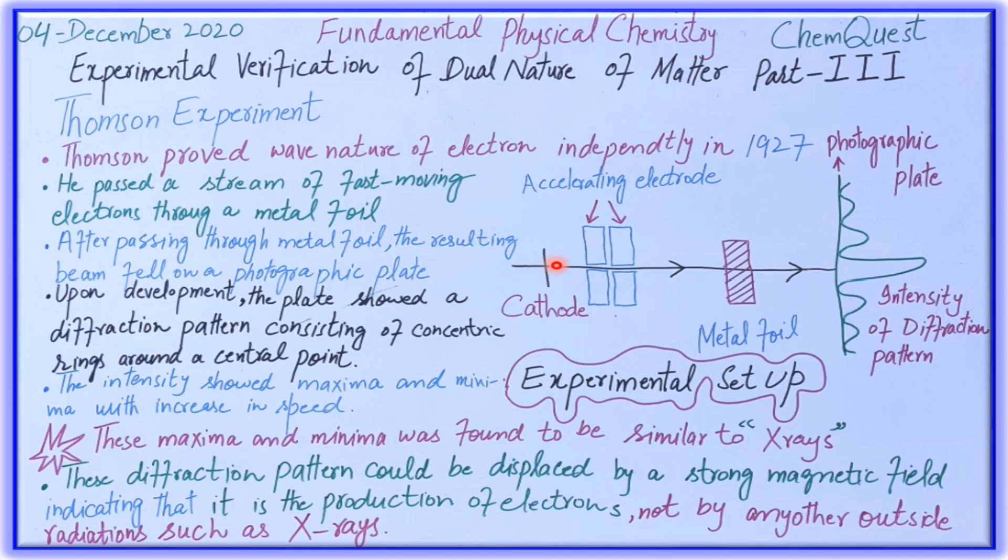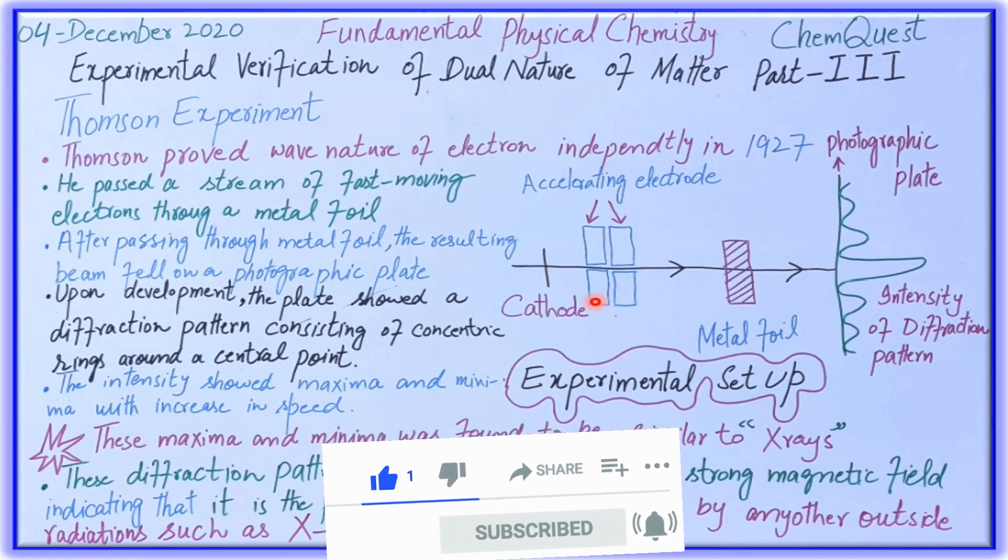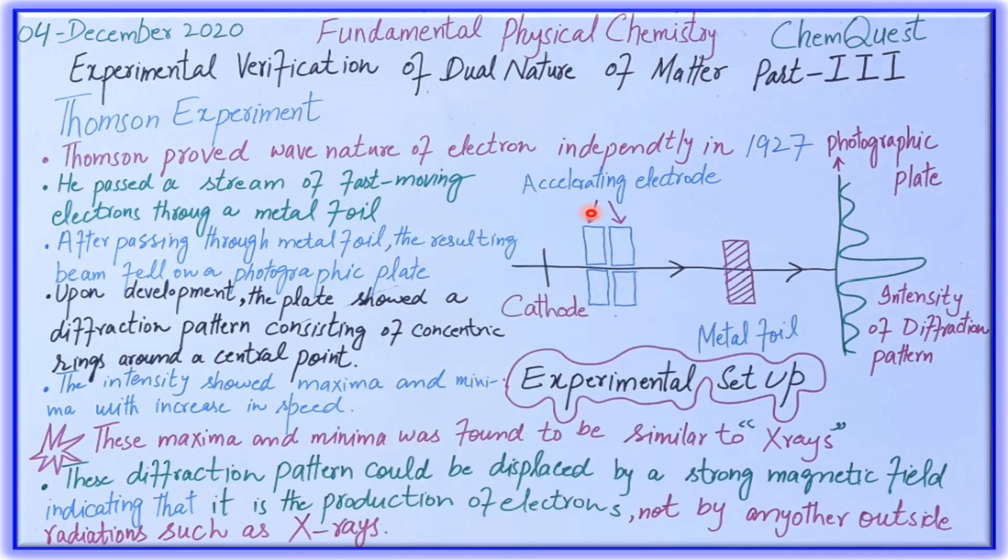This is the accelerating electrode for the electrons. In this experiment, the electron beam must move at high speed. We use this electron accelerating electrode and keep it at positive potential. As you know that electrons have negative charge, this positive charge will accelerate them very quickly. This fast moving beam of electrons will move towards a metal foil.